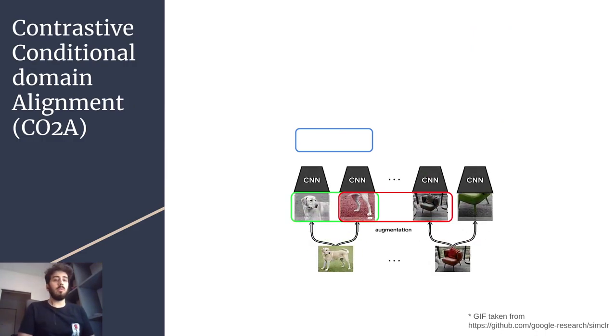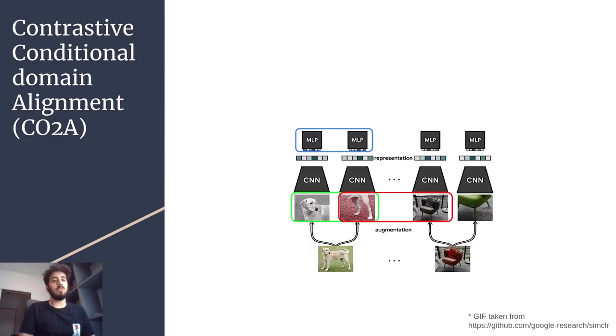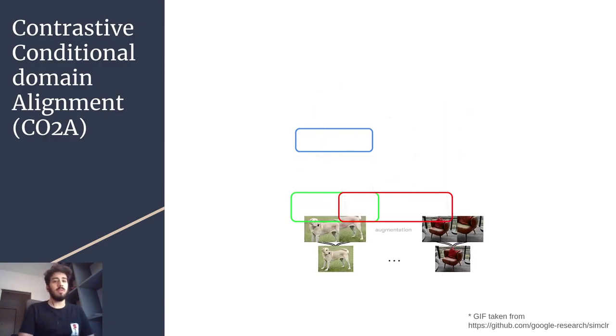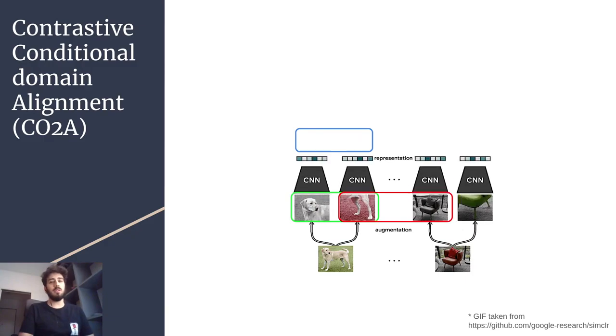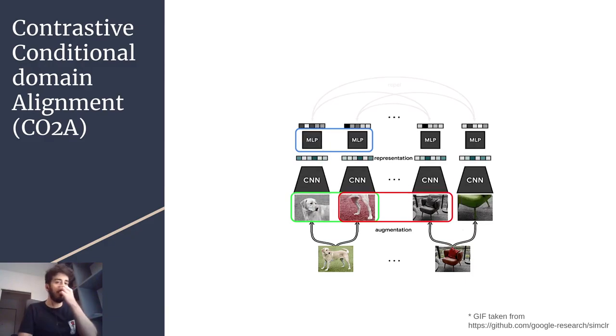Also we present our novel method, which is called Contrastive Conditional Domain Alignment or COCOA. It's mostly based on contrastive learning to learn better feature representations for the target domain and to align both domains. Generally speaking, contrastive learning consists of producing similar feature representations for a pair of instances that are positive and dissimilar representations for a pair that is negative, as shown in the animation on the side.